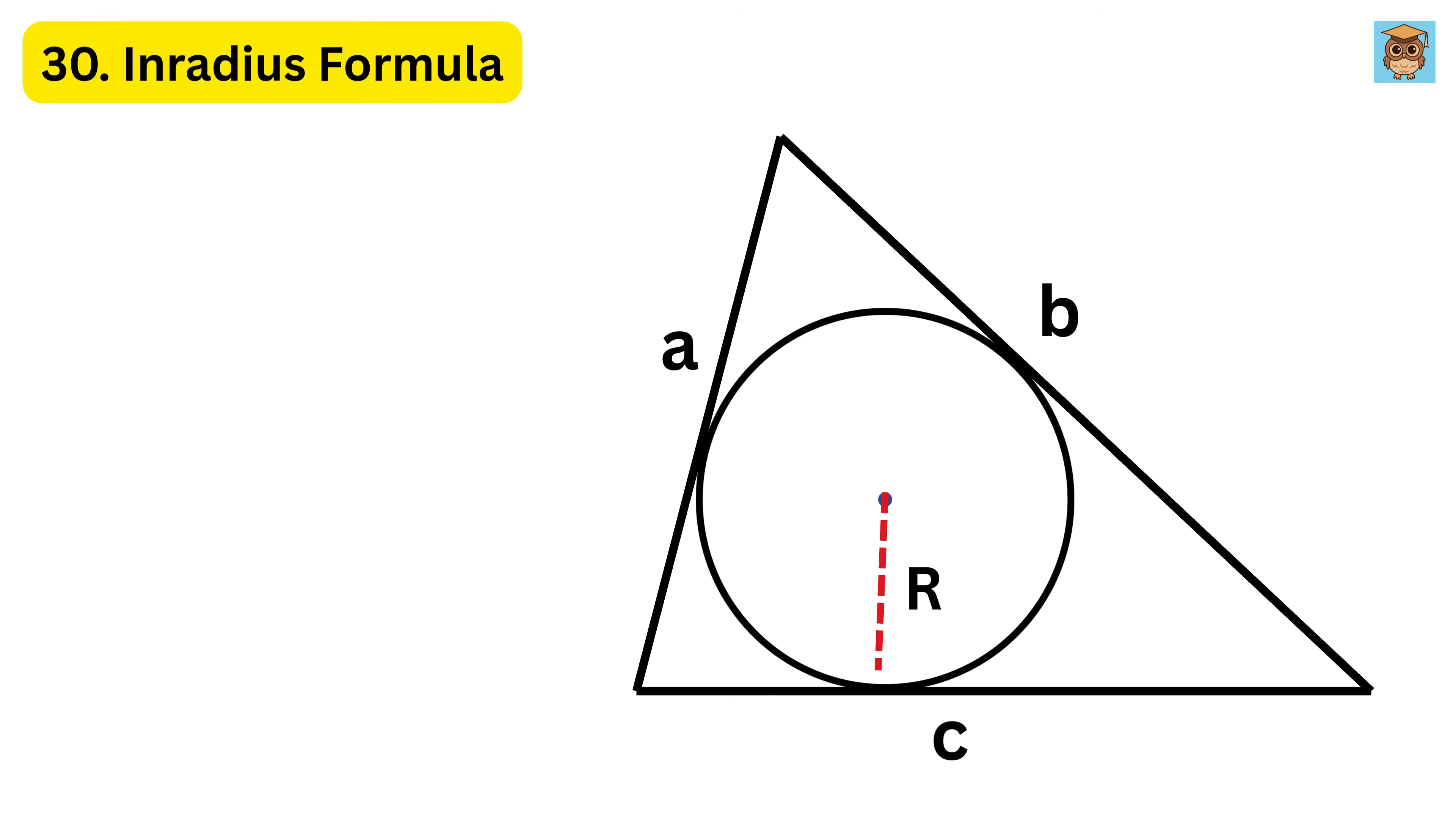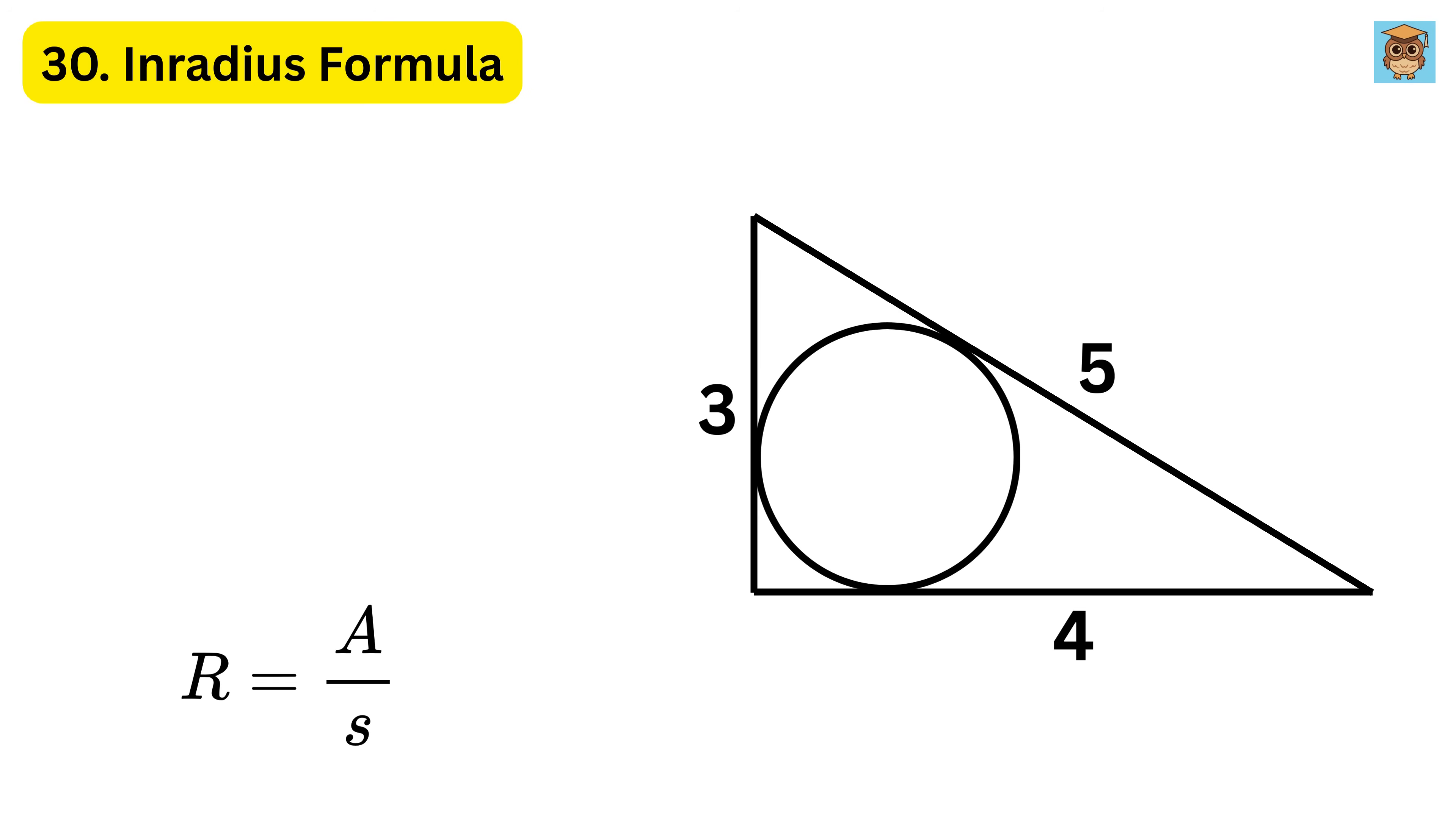30. Inradius formula is for the small circle inside the triangle that touches all three sides. The size of that circle, called the radius R, is the area divided by the semi-perimeter. So, if the triangle has an area of 6 and a semi-perimeter of 6, then the radius is 6 divided by 6, which is 1.